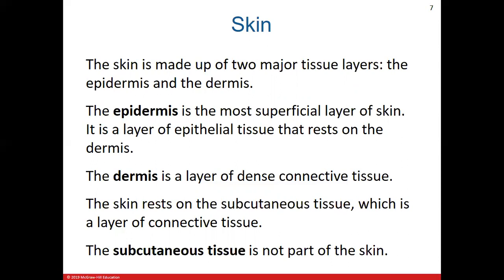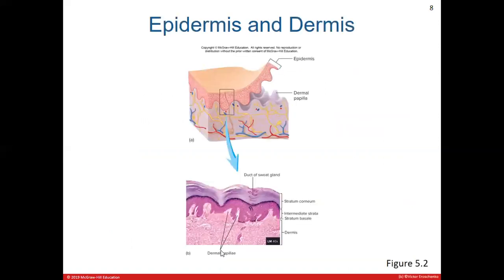This slide gives a brief definition for each layer of the skin. The epidermis is the most superficial layer and is basically epithelial tissue. Remember from chapter 4 the four major tissue types — you'll see those in each chapter throughout the course. The dermis is deep to that; it's basically dense connective tissue. The dermis rests on the subcutaneous tissue, which is also a type of connective tissue. Note that subcutaneous tissue is technically not part of the skin.